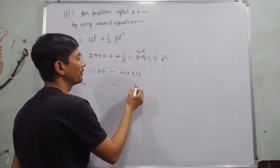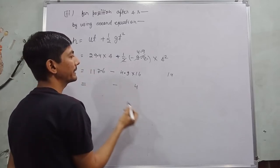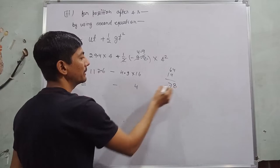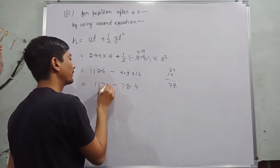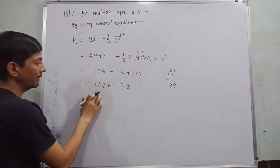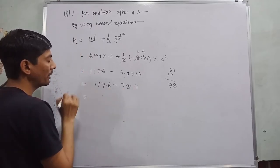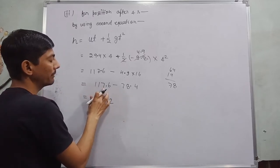times 9 goes 144, 4 14 carry, 16 times 4, 4, 4, 4, 8, 7, 78. So this will be 117.6 minus 78.4. So after that, what: 6 minus 4 become 2, 7